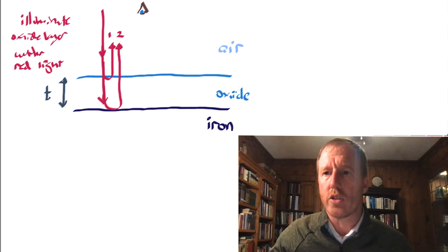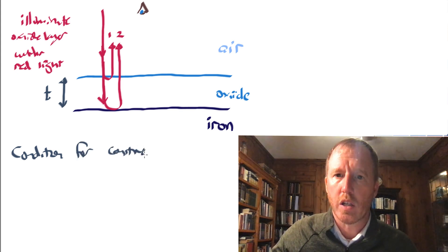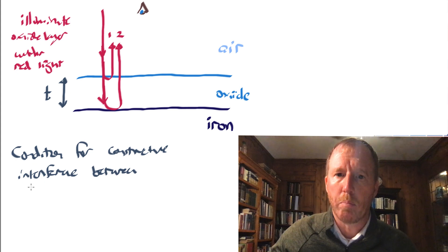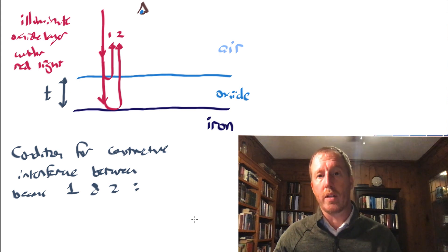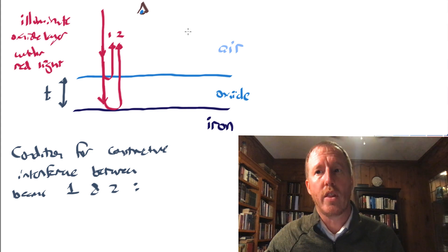So what is the condition for constructive interference between beams one and two? Well, let's just say what we mean by constructive interference. That would mean that they're in phase with one another. And so if you view this from above, the film, the oxide film will appear bright. And so what is the condition for that?